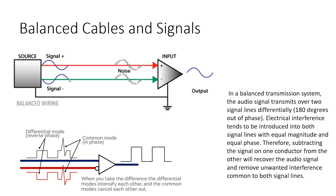Balanced cables and signals: In a balanced transmission system, the audio signal is transmitted over two signal lines differentially — 180 degrees out of phase. Electrical interference tends to be introduced into both signal lines with equal magnitude and equal phase. Therefore, subtracting the signal on one conductor from the other recovers the audio signal and removes unwanted interference common to both signal lines. This works equally well for analog and digital signal transmission. Because of this, a balanced cable can support much longer cable runs — more than 100 meters — and even shorter runs often use balanced wiring to protect against noise.